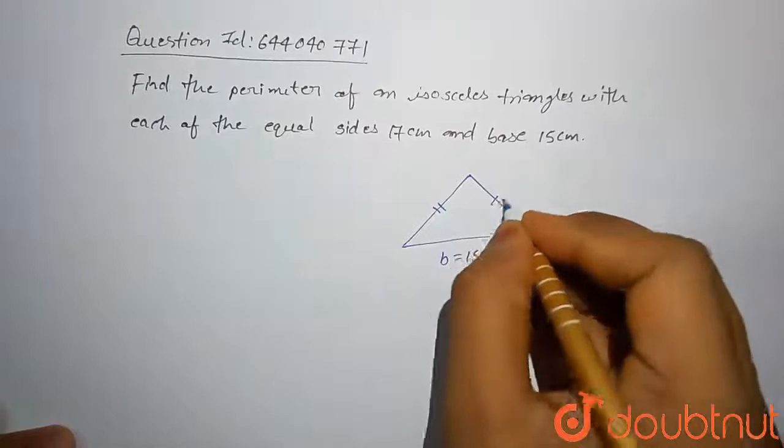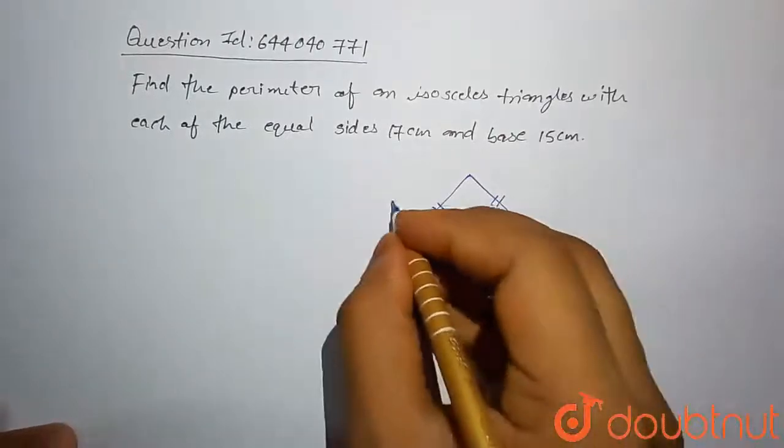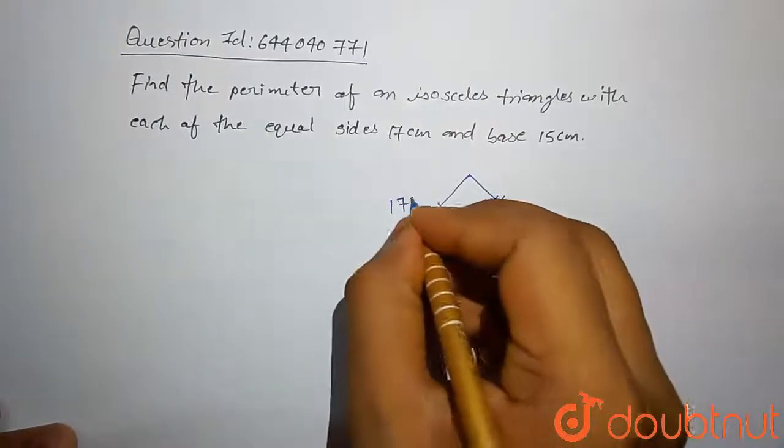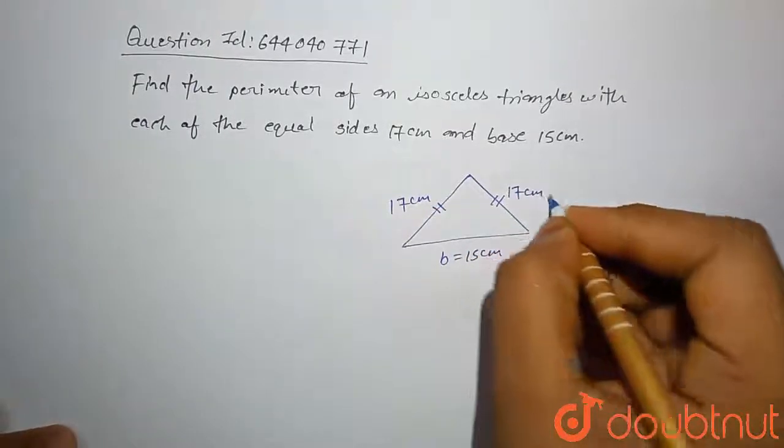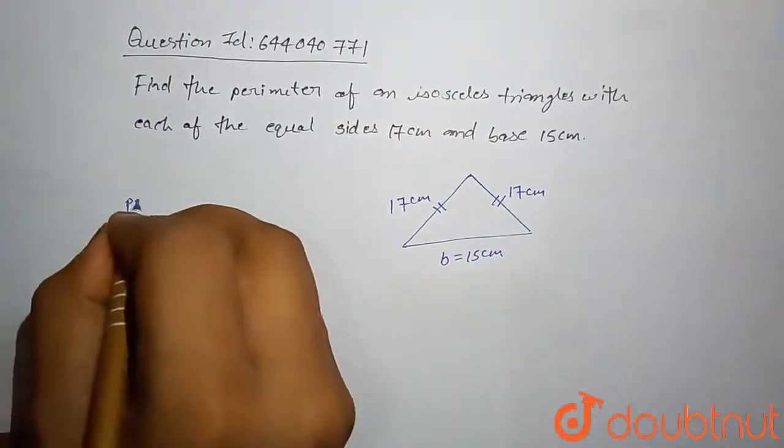And this is equal side which is given 17 centimeter. This is also 17 centimeter. Then perimeter of this isosceles triangle is sum of these three sides.